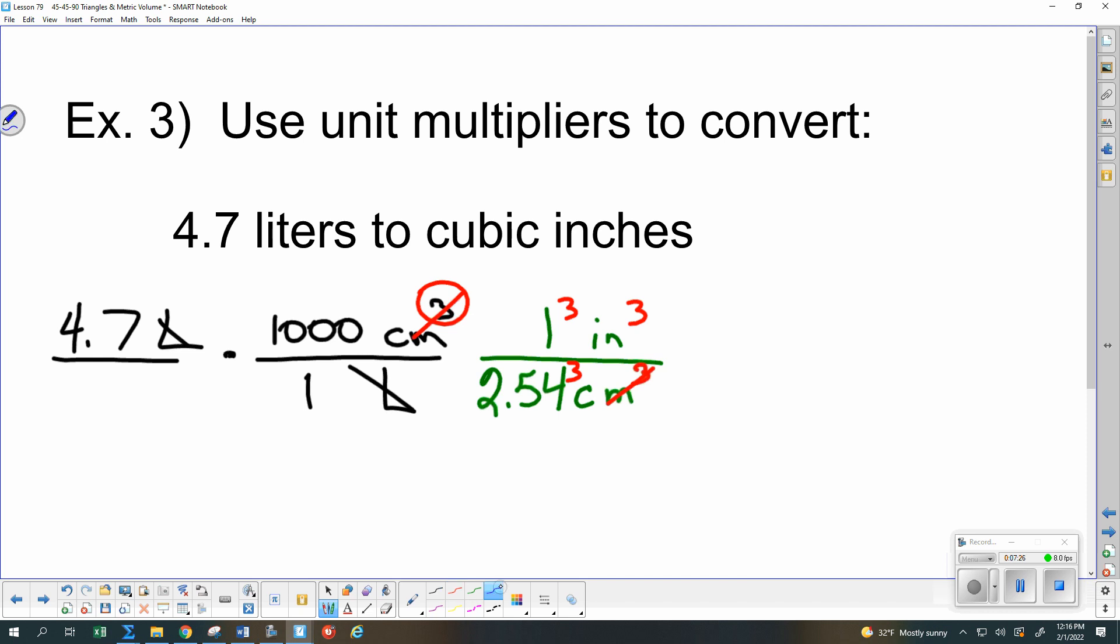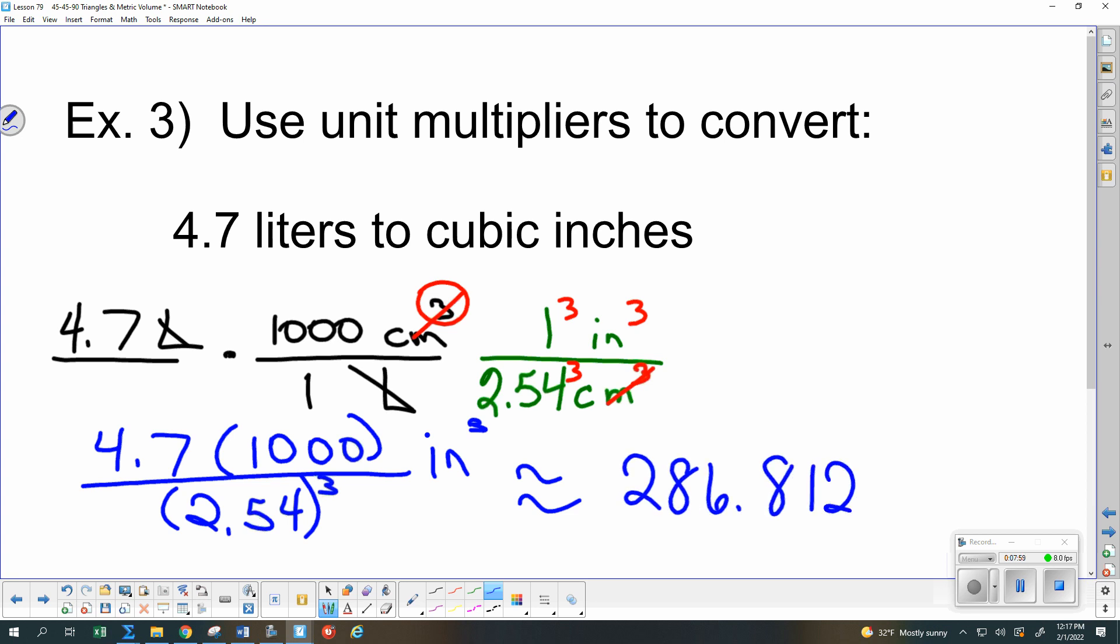So once again, punch this in your calculators for me. 4.7 times 1,000, so that's not cubed. Over 2.54, that is cubed, and we don't need the ones in there. And that will be cubic inches. And who's typed that in your calculator already? Wyatt, what do you have? Anybody else? 286.812? And label it with cubic inches. Questions on any of that?